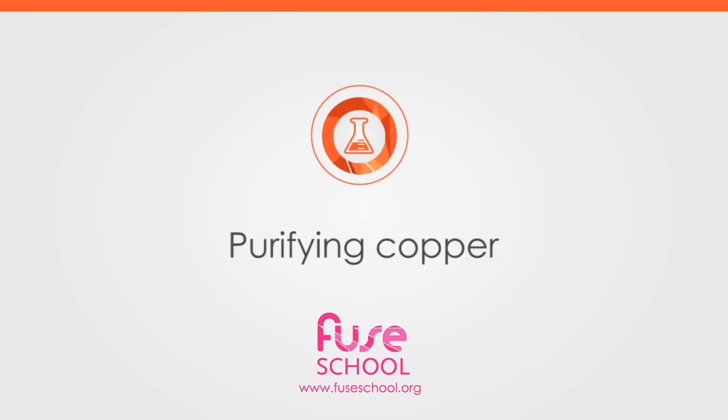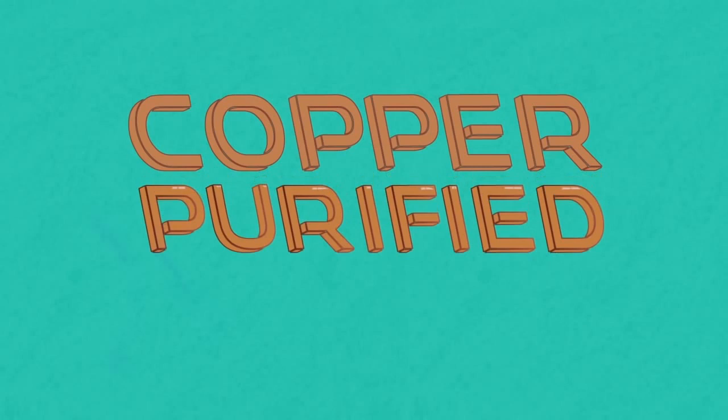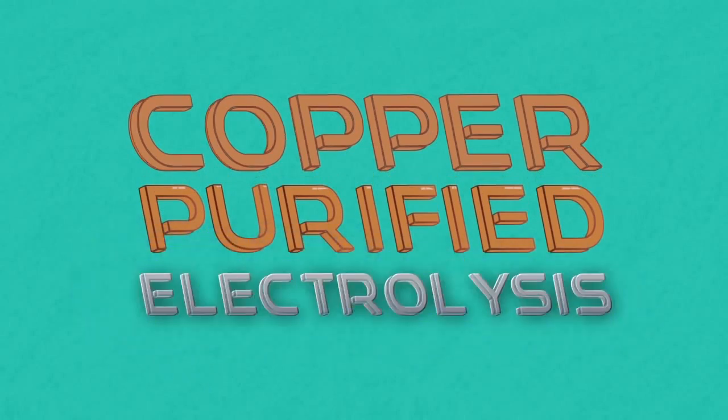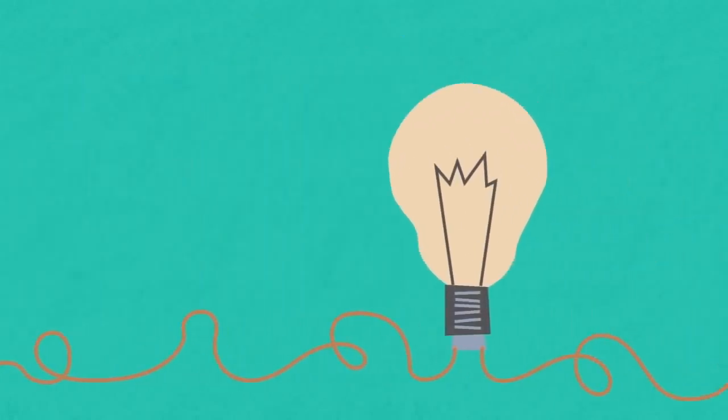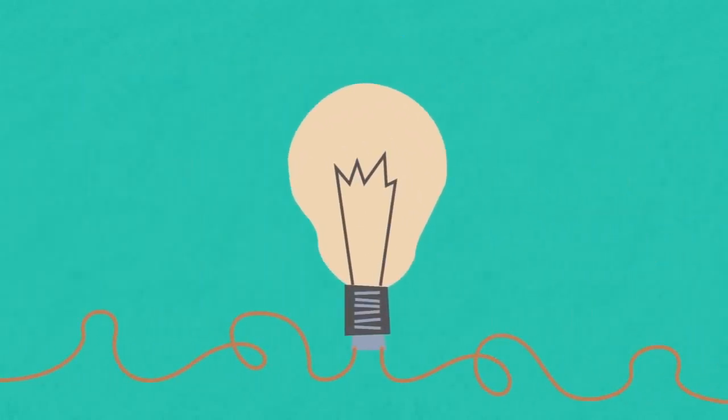In this video we are going to learn how copper is purified using electrolysis. Copper metal is extracted from its ore by smelting but is not pure enough to be used as an electrical conductor. As a result, it needs to be purified using the process called electrolysis.